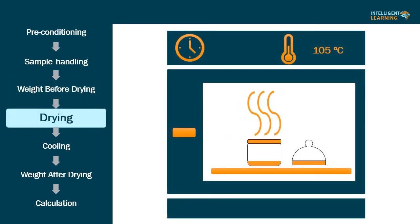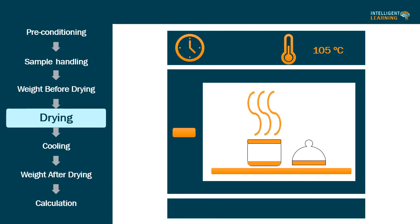Fourth step: drying. Place the loaded bottle in the drying chamber. Remove the stopper and leave it also in the chamber. Dry the test specimen at the specified temperature and time conditions. The temperature specified in the method of analysis is to be regarded as being within the range of plus or minus 2 degrees Celsius of the stated value.